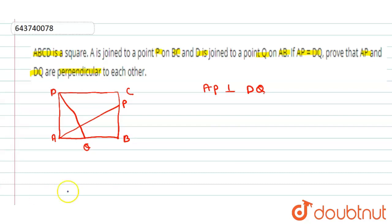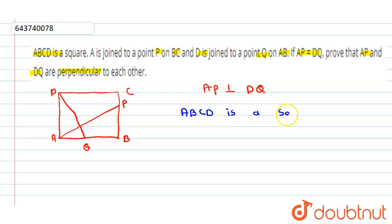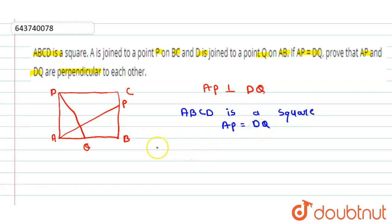The given conditions are: ABCD is a square, and AP is equal to DQ.